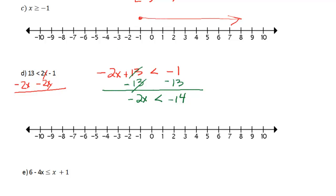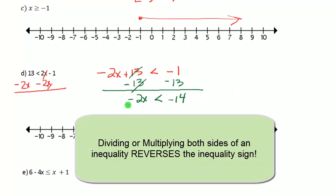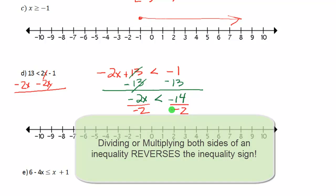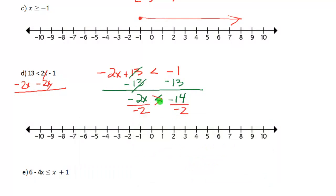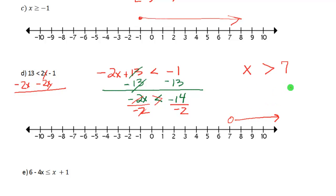Now to isolate x, I'm going to divide both sides by negative 2. I need to tell you about a rule for inequalities: dividing or multiplying both sides of an inequality by a negative number reverses the inequality sign. So this less than becomes a greater than sign. The negative 2's cancel and I get x is greater than positive 7 — since negative 14 divided by negative 2 is 7. Seven is our boundary point; I put an open circle because there's no equal sign, and the arrow goes to the right.